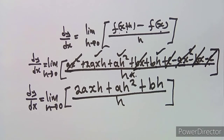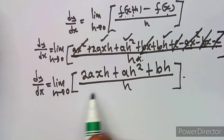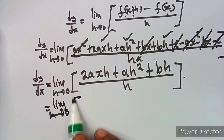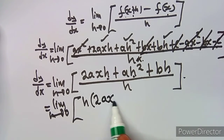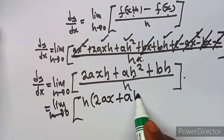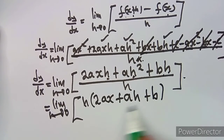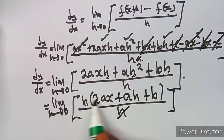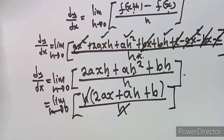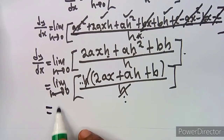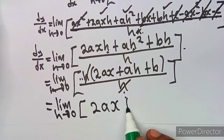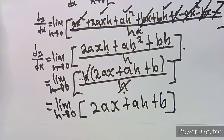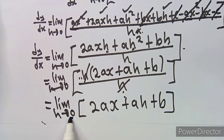Now we can factor out H from the numerator since it is common throughout. Factoring out H gives H(2ax + aH + b) divided by H. The H in the numerator and the H in the denominator cancel, leaving the limit as H approaches zero of 2ax + aH + b.